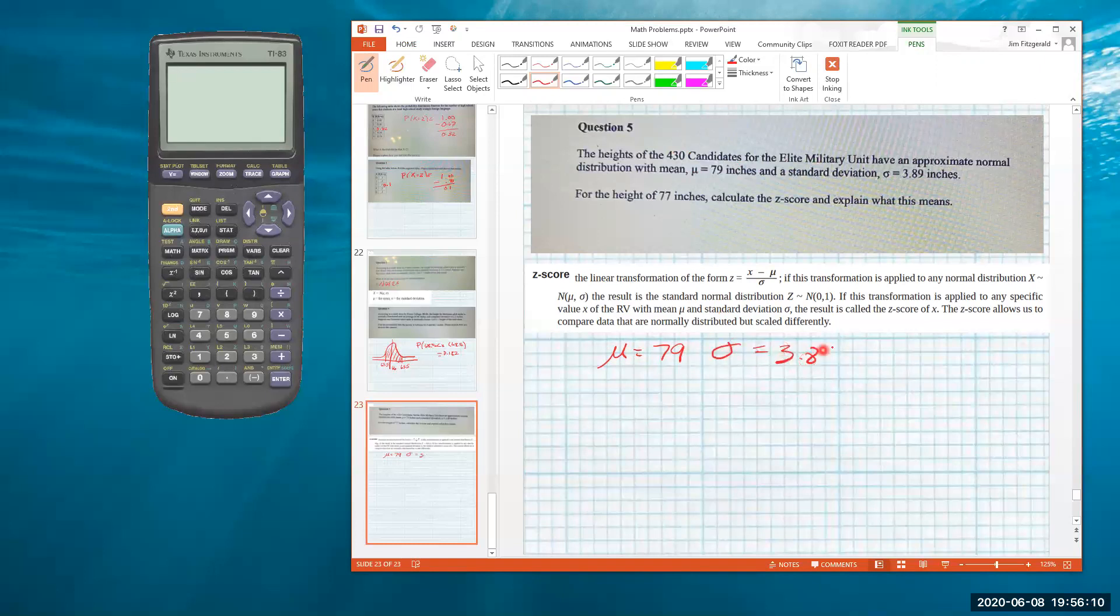And then we want to know about a height of 77 inches. So 77 inches is going to be less than the average, so we should get a negative z-score here. So let's go ahead and calculate that.